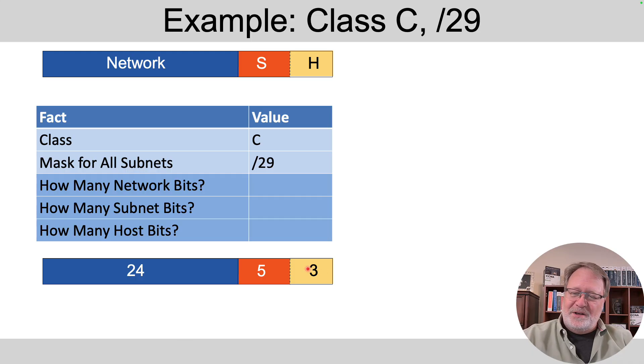And the usual math, 2 to the number of subnet bits to tell us how many subnets we'd create, 2 to the third in this case, minus 2 for 6 hosts per subnet.